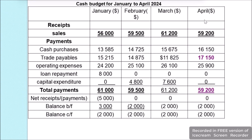After adjustments for April: sales are $59,200, cash purchases are $16,150, adjusted trade payables are $17,150, and operating expenses are $25,900. Total payments equal $59,200 — matching receipts. Net receipts and payments are zero. The opening overdraft of $2,000 is carried forward as $2,000. Company policy is followed and Part B is complete.